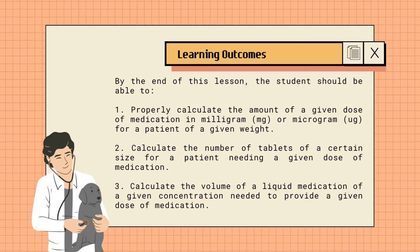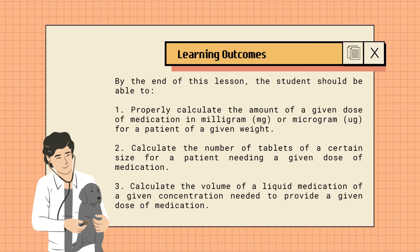Learning outcomes. At the end of this lesson, the students should be able to: number one, properly calculate the amount of a given dose of medication in milligrams or micrograms for a patient of a given weight. Number two, calculate the number of tablets of a certain size for a patient needing a given dose of medication. Number three, calculate the volume of a liquid medication of a given concentration needed to provide a given dose of medication.